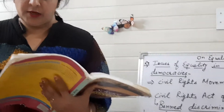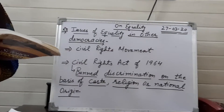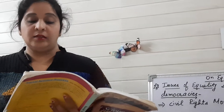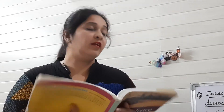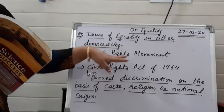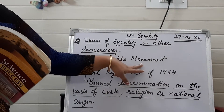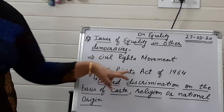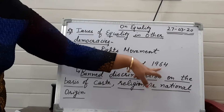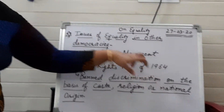Rosa Parks was an African American lady who refused to give up her bus seat because she was tired and felt insulted. Her small action gave rise to a huge movement which came to be known as the Civil Rights Movement. This movement later changed into the Civil Rights Act of 1964.